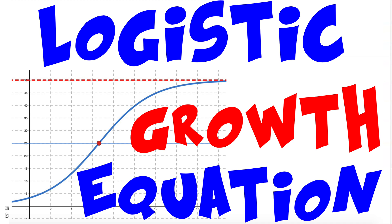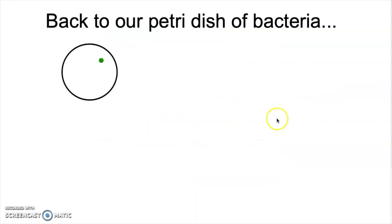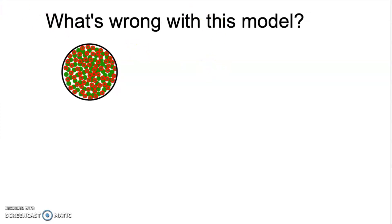Back to the example we started with in the last video, where we had this bacteria growing in a petri dish, and we started by thinking about why the basic exponential model won't work here. If we start with one bacteria, then two, four, eight, sixteen, everything's going fine for a while, but eventually these bacteria are going to fill up this dish, and we're going to have a problem.